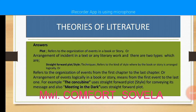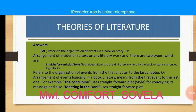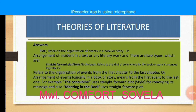There are two types of plot. The first is straightforward plot or style. By definition, straightforward plot or style refers to the kind of style whereby a book or story is arranged logically — that is, the organization of events from the first chapter to the last chapter, or the arrangement of events logically from the first event to the last.